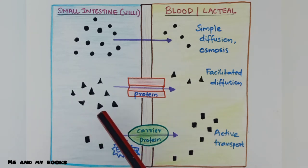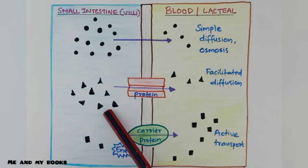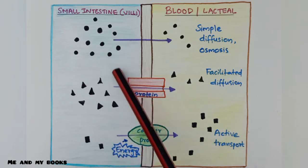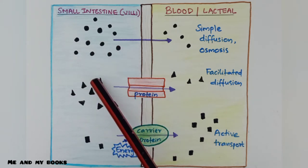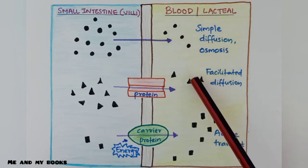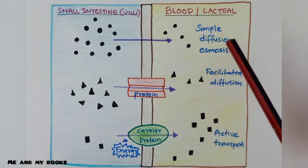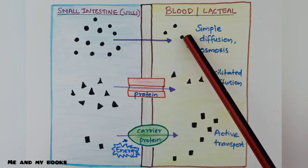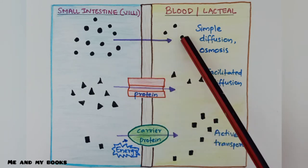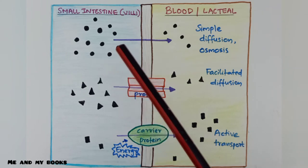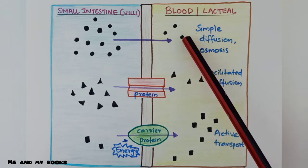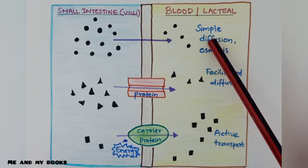Simple nutrients such as glucose, fructose, galactose, amino acid, fatty acid, and glycerol are present in the small intestine or villi. This region is of high concentration. They move from the small intestine to the blood or lacteal — this process is called simple diffusion. The second absorption method is osmosis, which is similar but there is a difference.